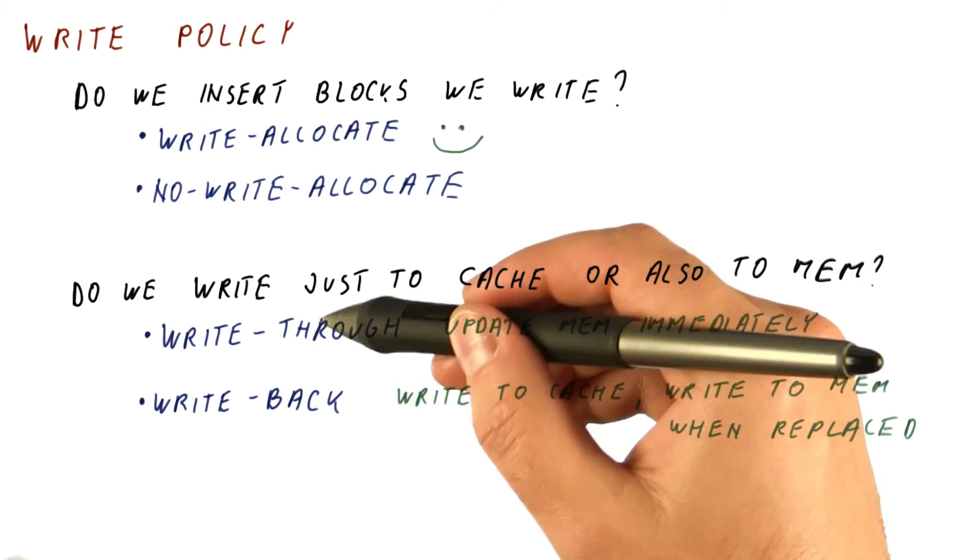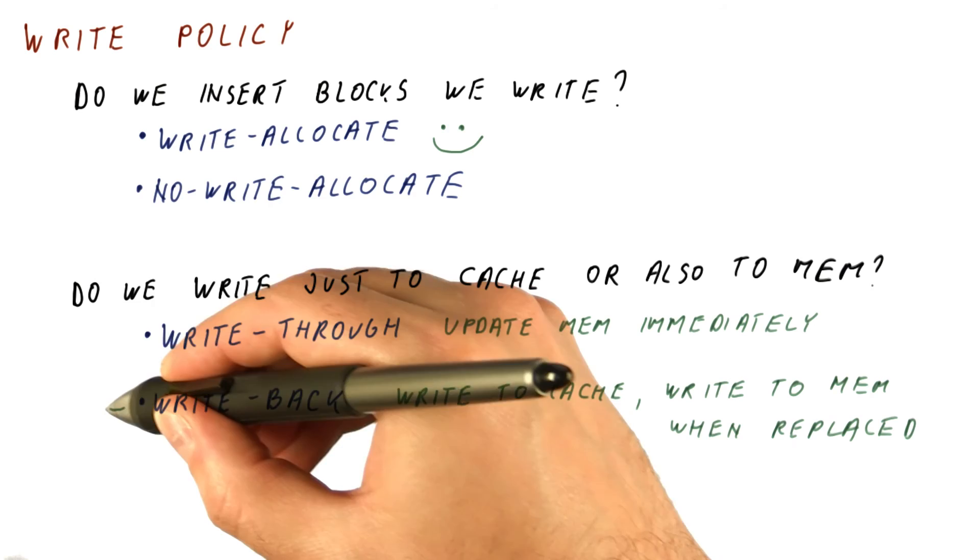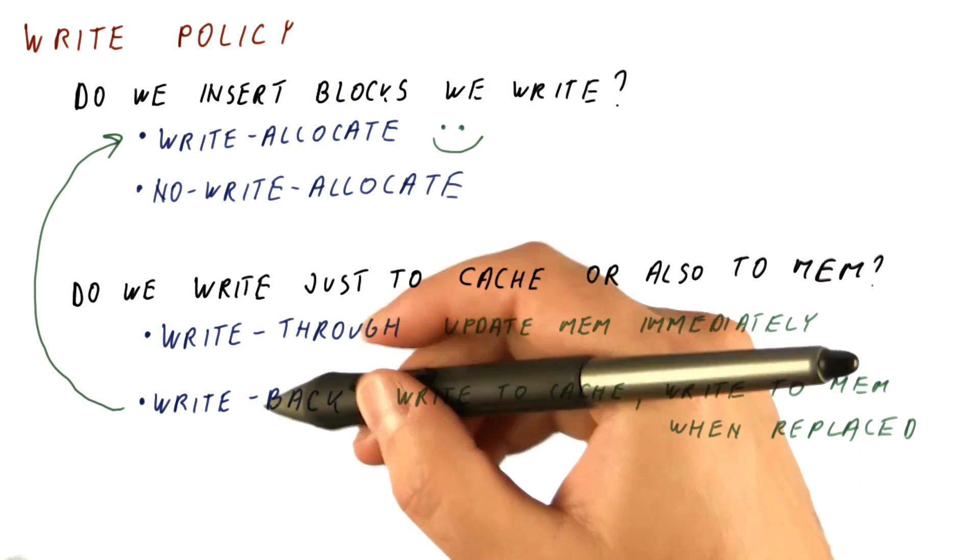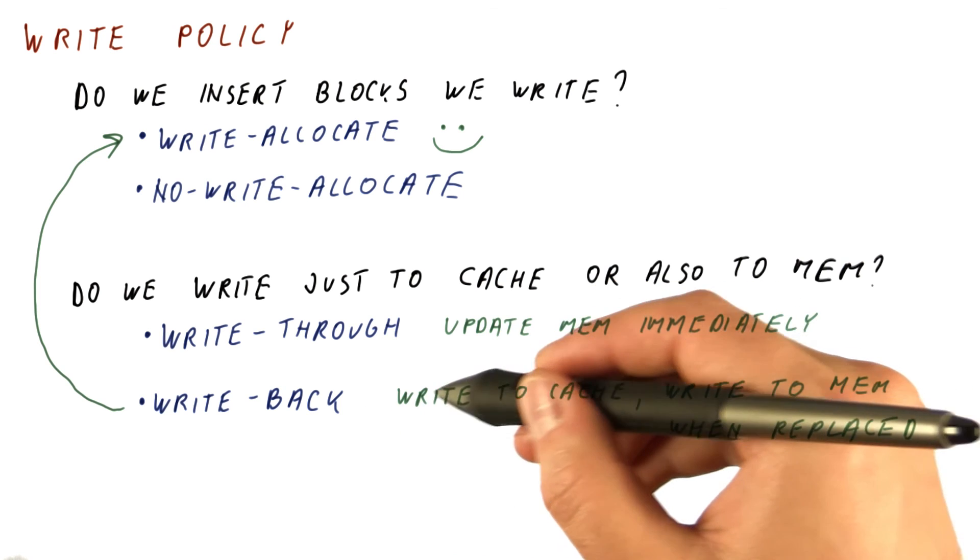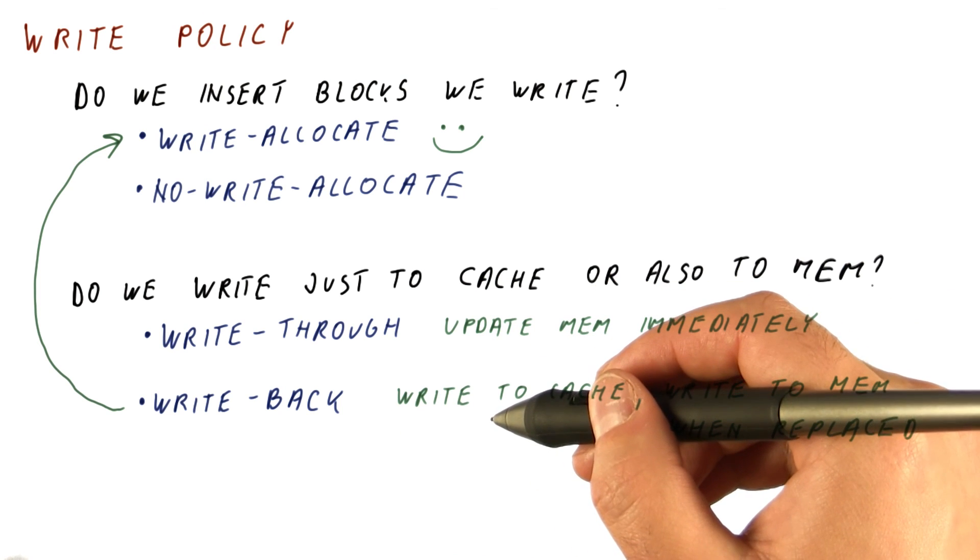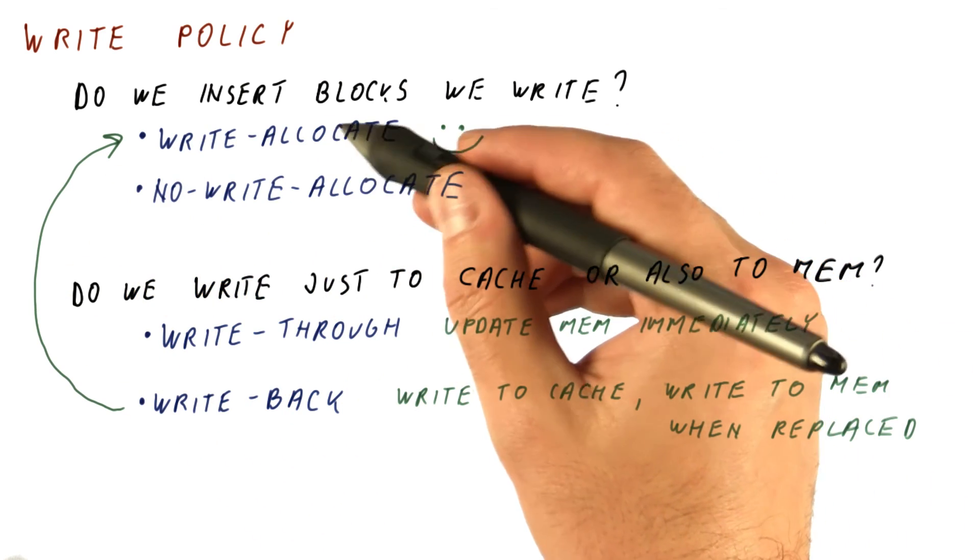There is also some relationship between this choice and this. If you have a write-back cache, you want to also have a write-allocate cache, because you're saving writes to memory by writing only to the cache. If you have a write miss, you want to have future writes go to the cache, so you do write-allocate.